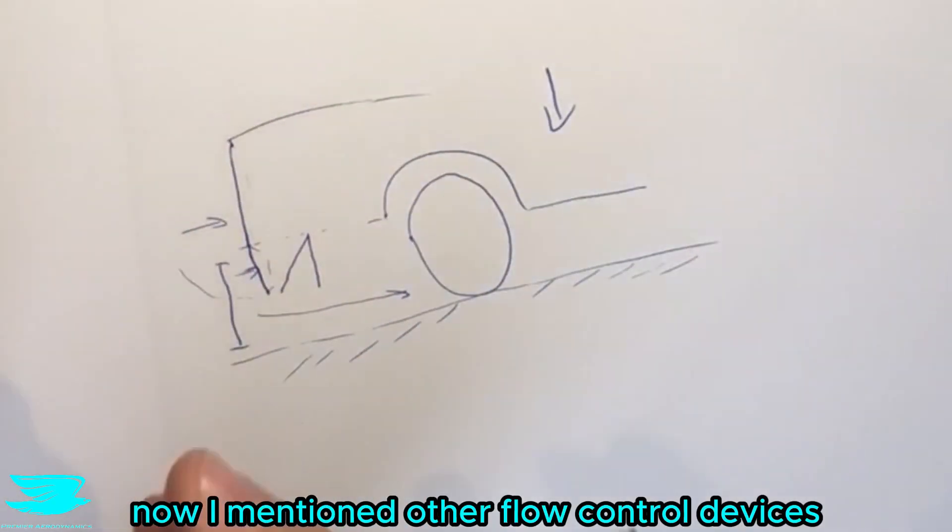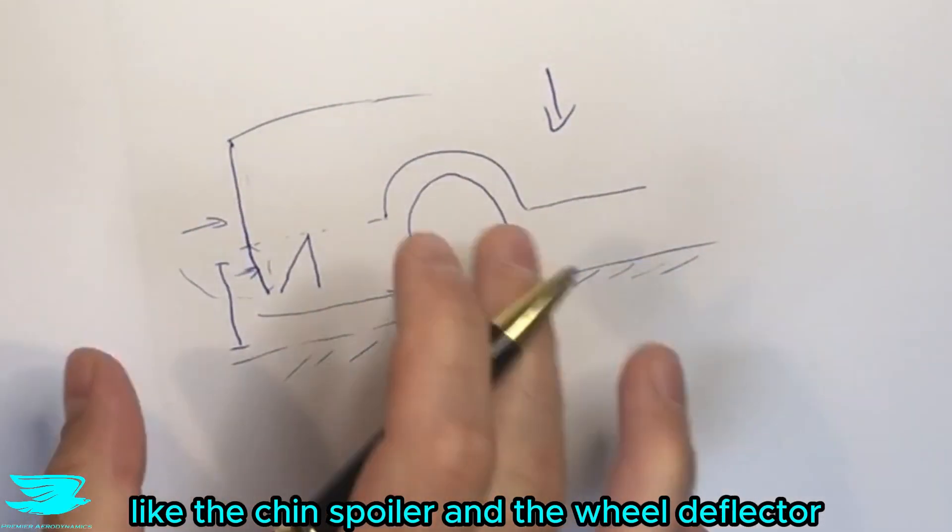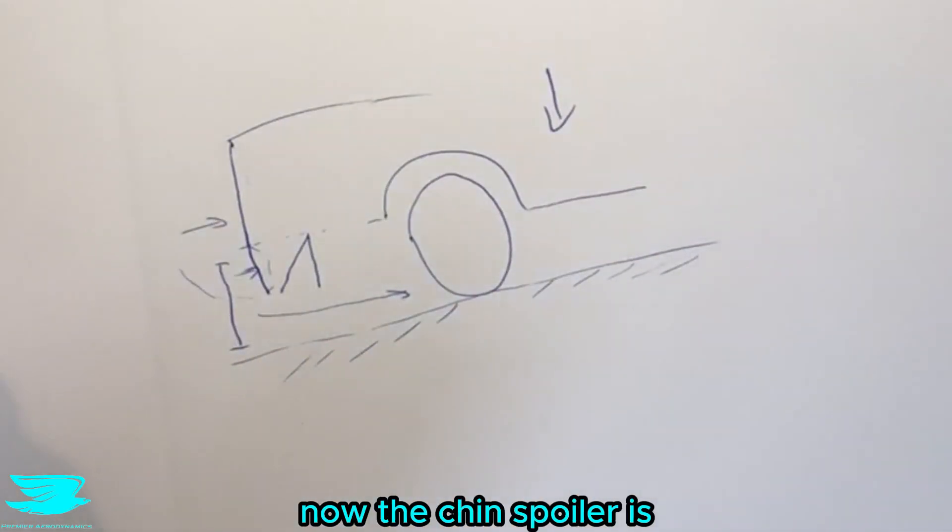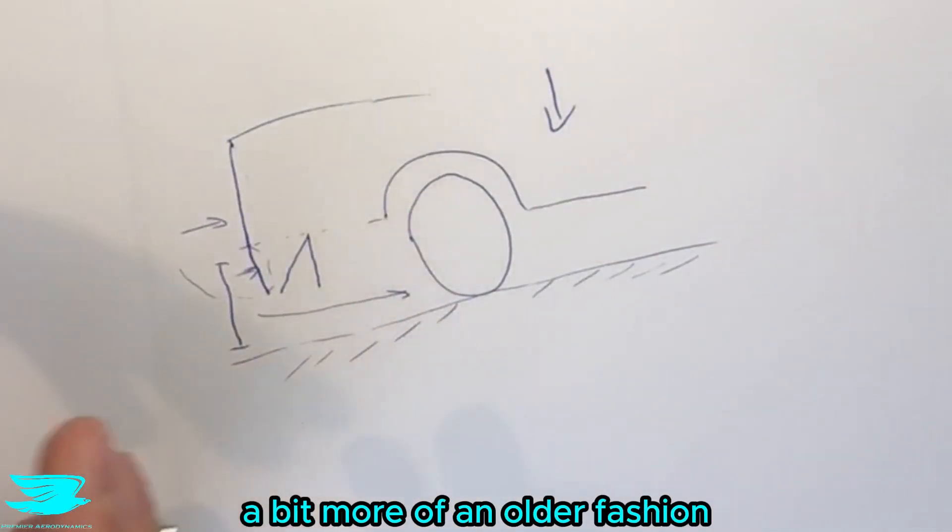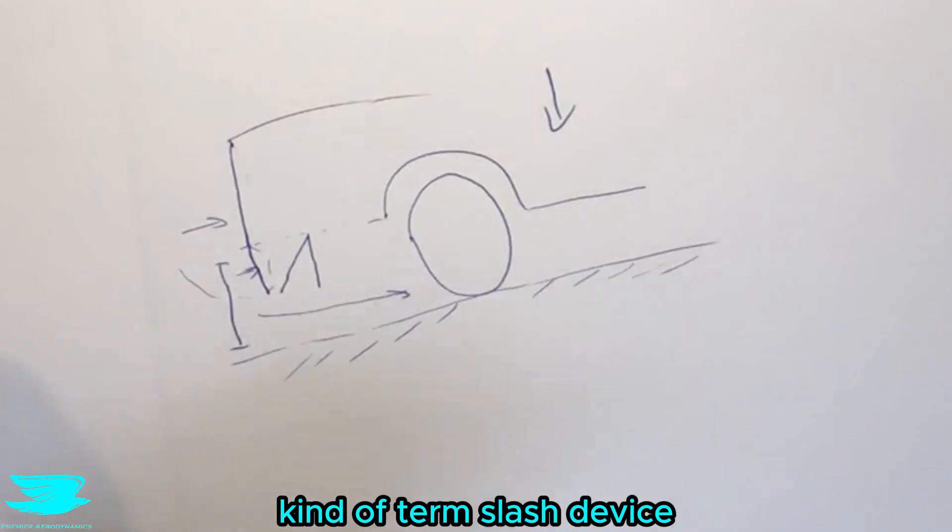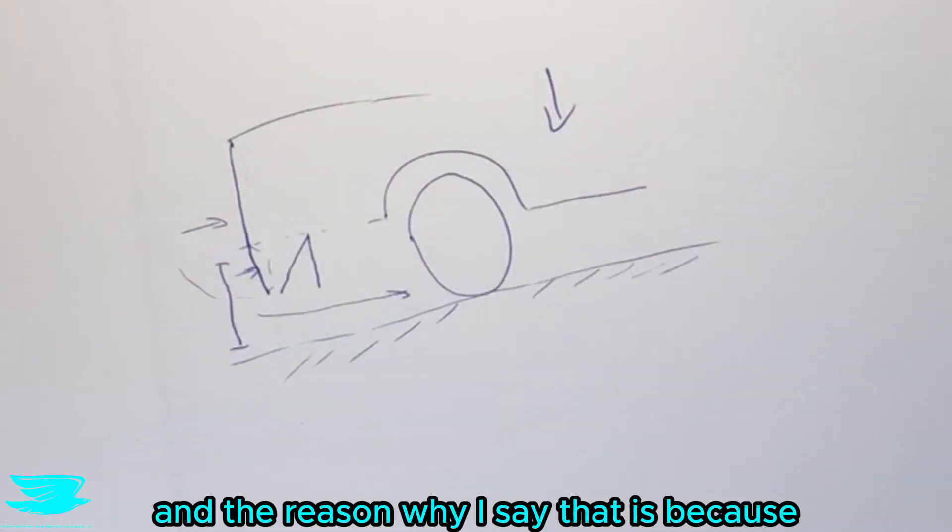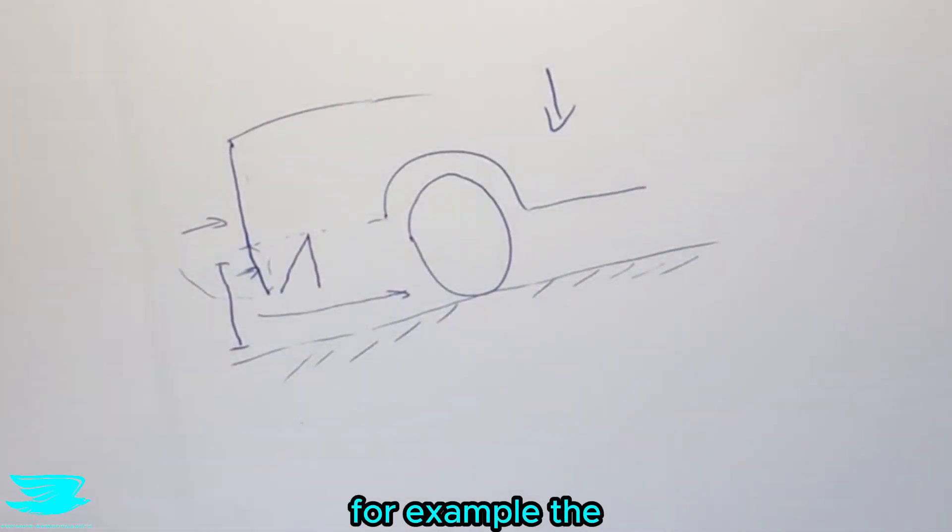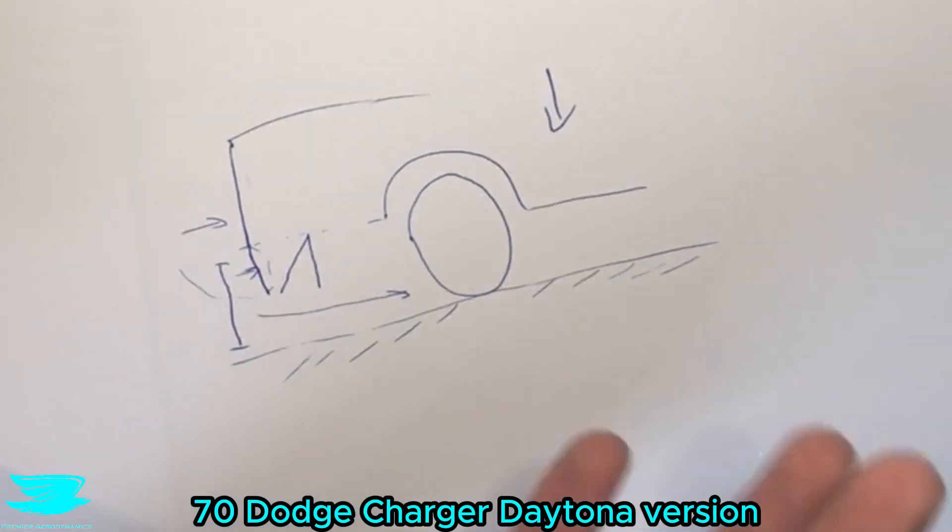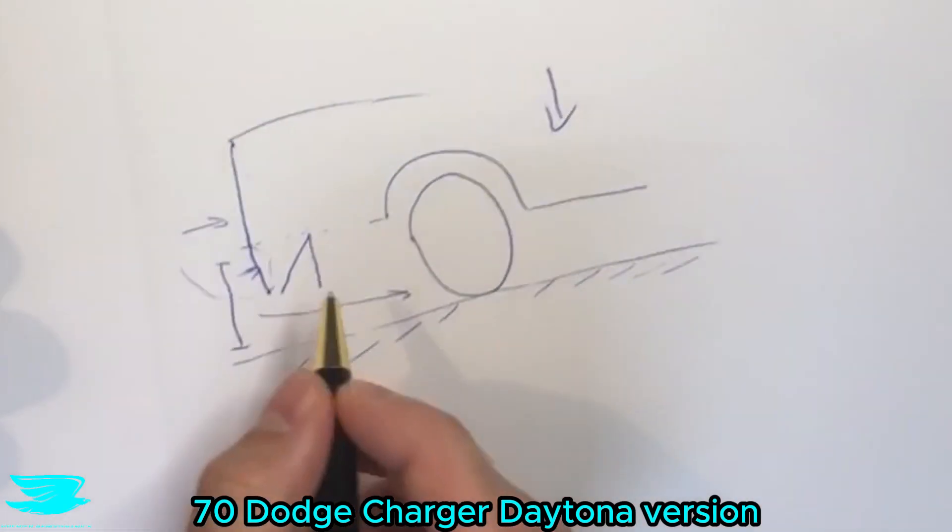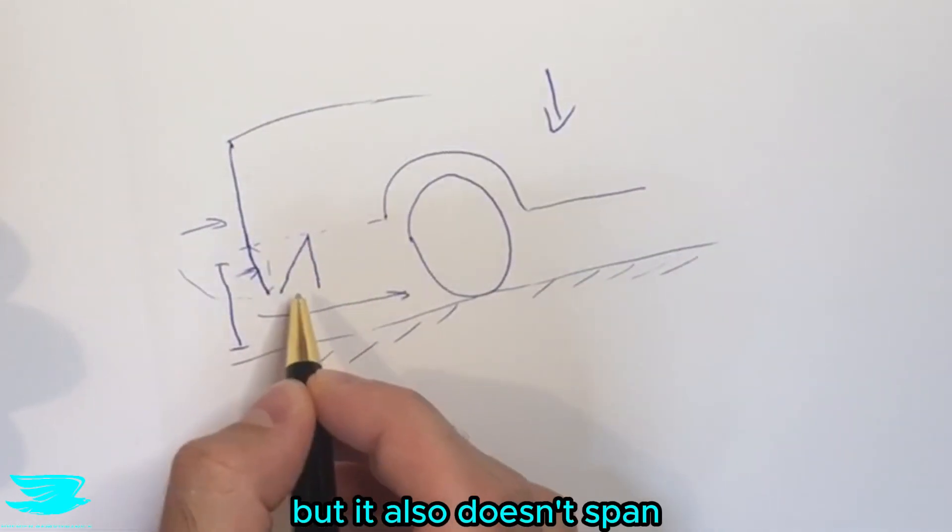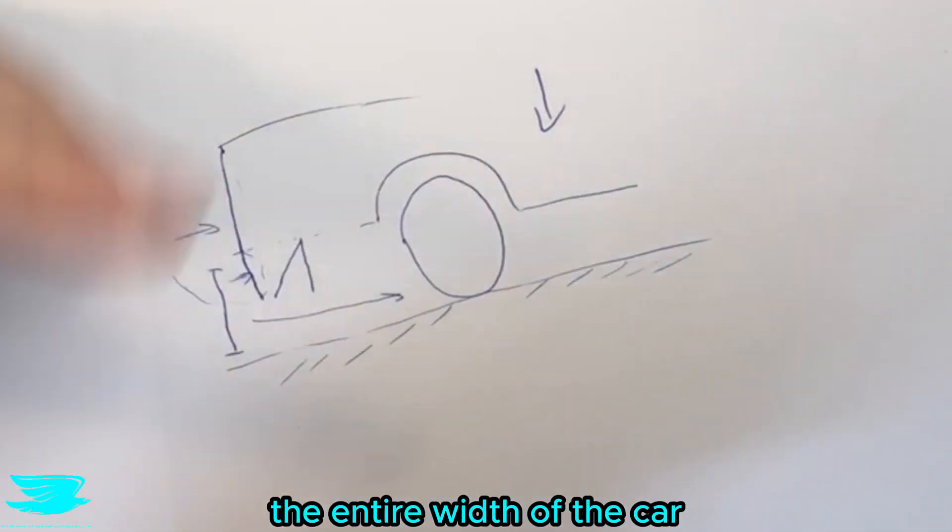Now I mentioned other flow control devices like the chin spoiler and the wheel deflector. Now the chin spoiler is a bit more of an older fashion kind of term and device and the reason why I say that is because when you look at the older cars that have them, for example the 1970 Dodge Charger Daytona version, it comes out at the front but it also doesn't span the entire width of the car.